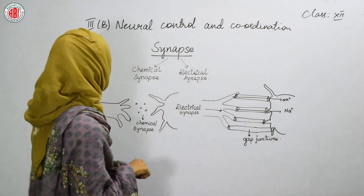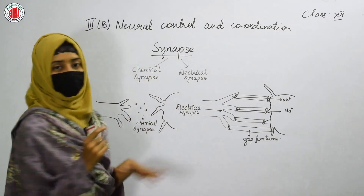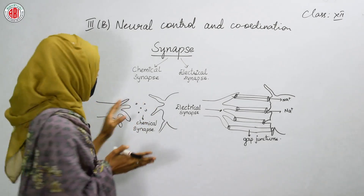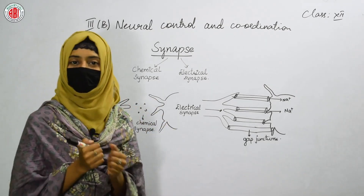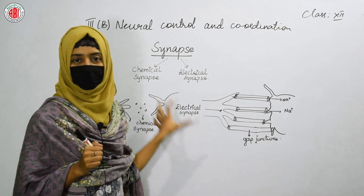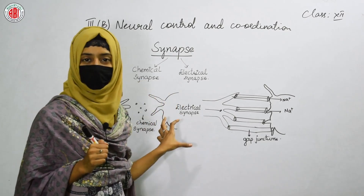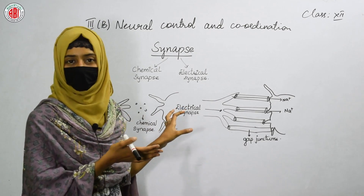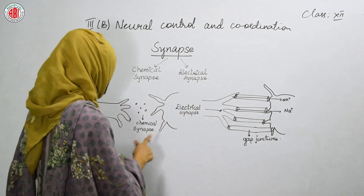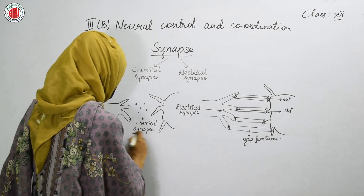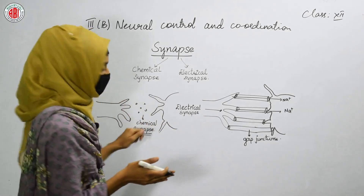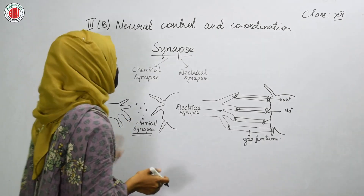We know that the entry of calcium causes the release of chemicals, and those chemicals can be received by another nerve cell, another neuron. In this way, the release of neurotransmitters that are received by another nerve cell causes a synapse — a chemical connection between the two nerve cells, and we call that connection as chemical synapse.